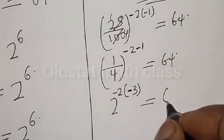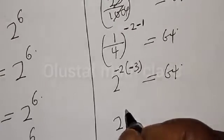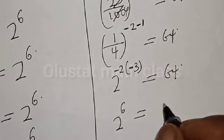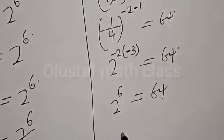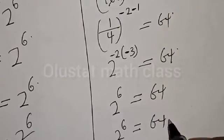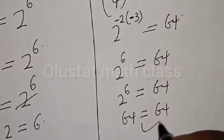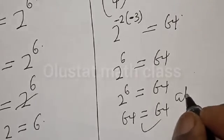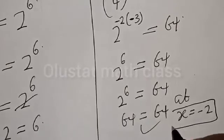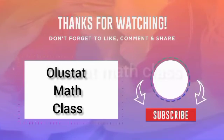We then have 2 raised to power minus 2 times minus 3, which is plus 6, must be equal to 64. And 2 raised to power 6 is equal to 64. Therefore 64 equals 64 — we satisfy the given equation at s equals minus 2. If you have enjoyed the class, please don't forget to like, share, comment and subscribe. Thank you.